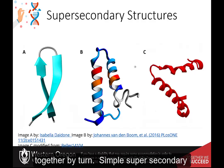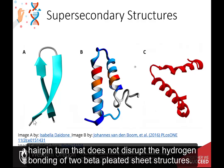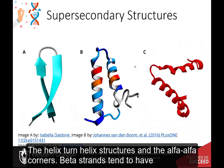Simple super-secondary structures include the beta-hairpin-beta structure, which is characterized by a sharp hairpin turn that does not disrupt the hydrogen bonding of two beta-pleated sheet structures. Other examples include the helix-turn-helix structure and the alpha-alpha corner.